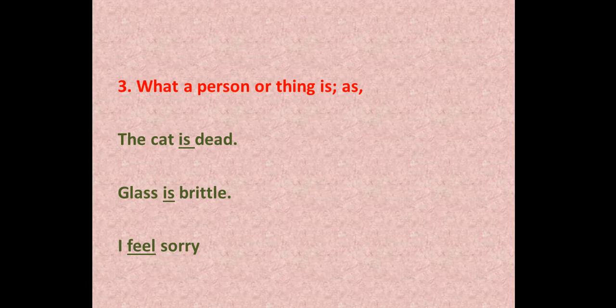A verb may also tell us what a person or thing is. For example, the cat is dead. Glass is brittle. I feel sorry. So here 'is' and 'feel' are verbs because they are telling us what a person or thing is.